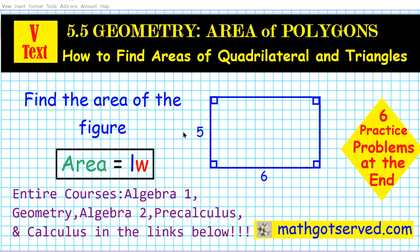The kind of problem we're going to be going through is captured here in this sample problem: find the area of the figure to the right. So we have a rectangle here, a 5 by 6, and using the formula area equals length times width, we can compute the area.